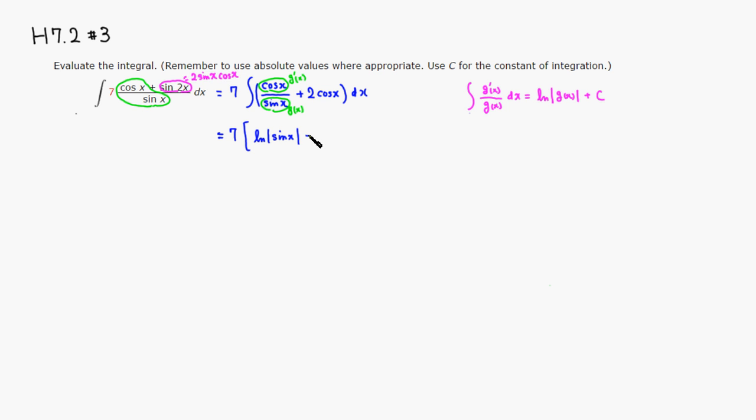Then plus 2. The antiderivative of cosine is sine, so you have sine of x, and plus some constant C.